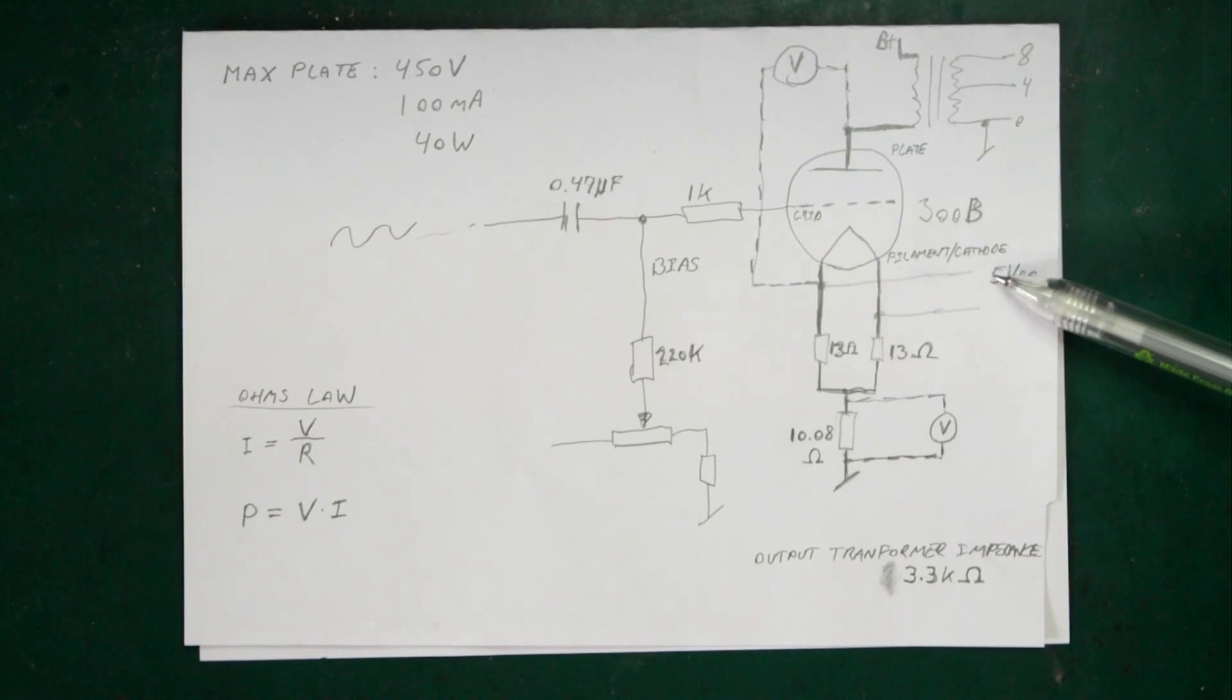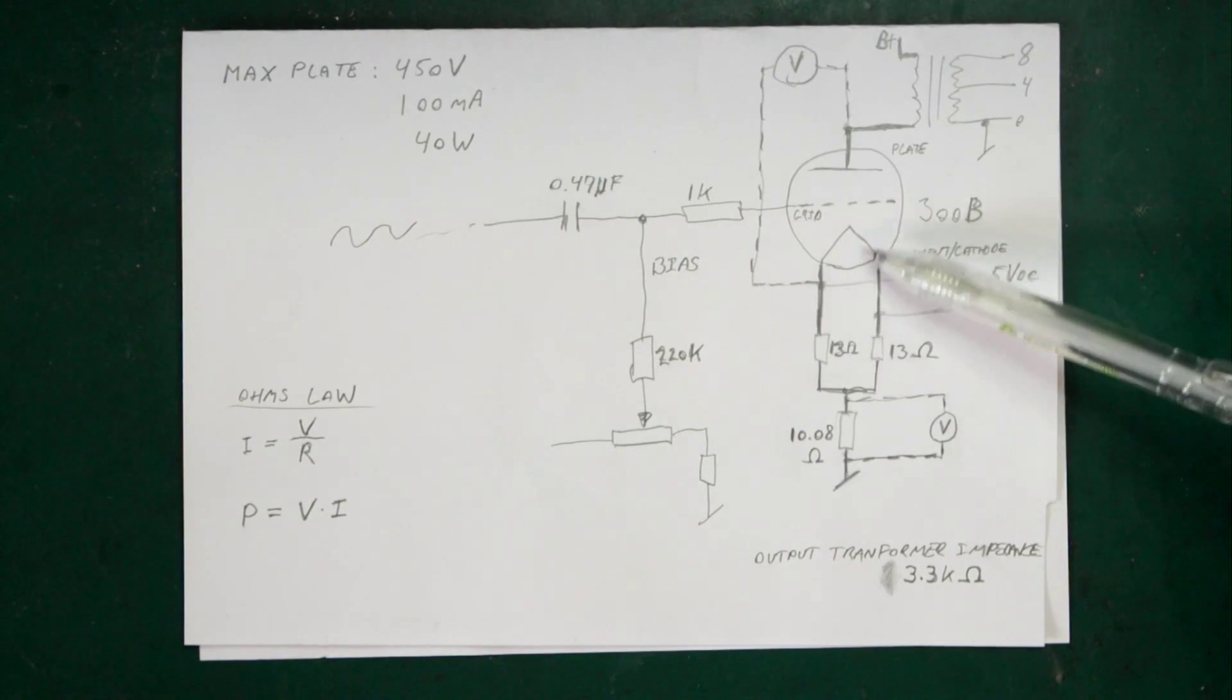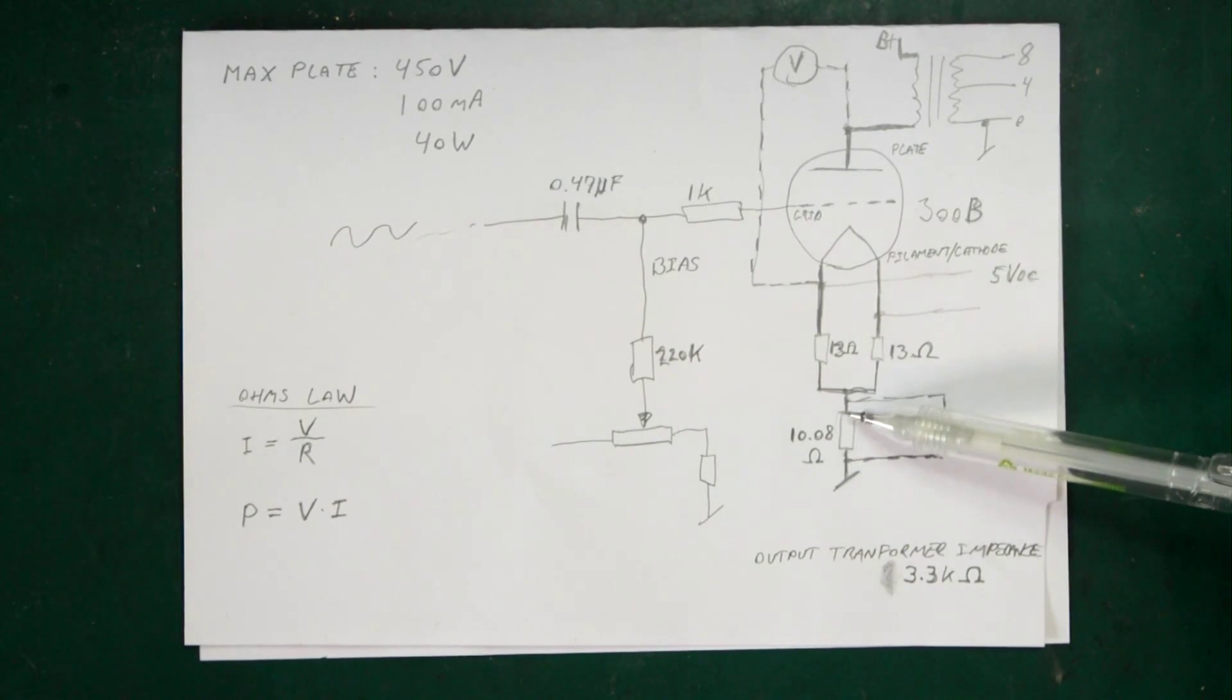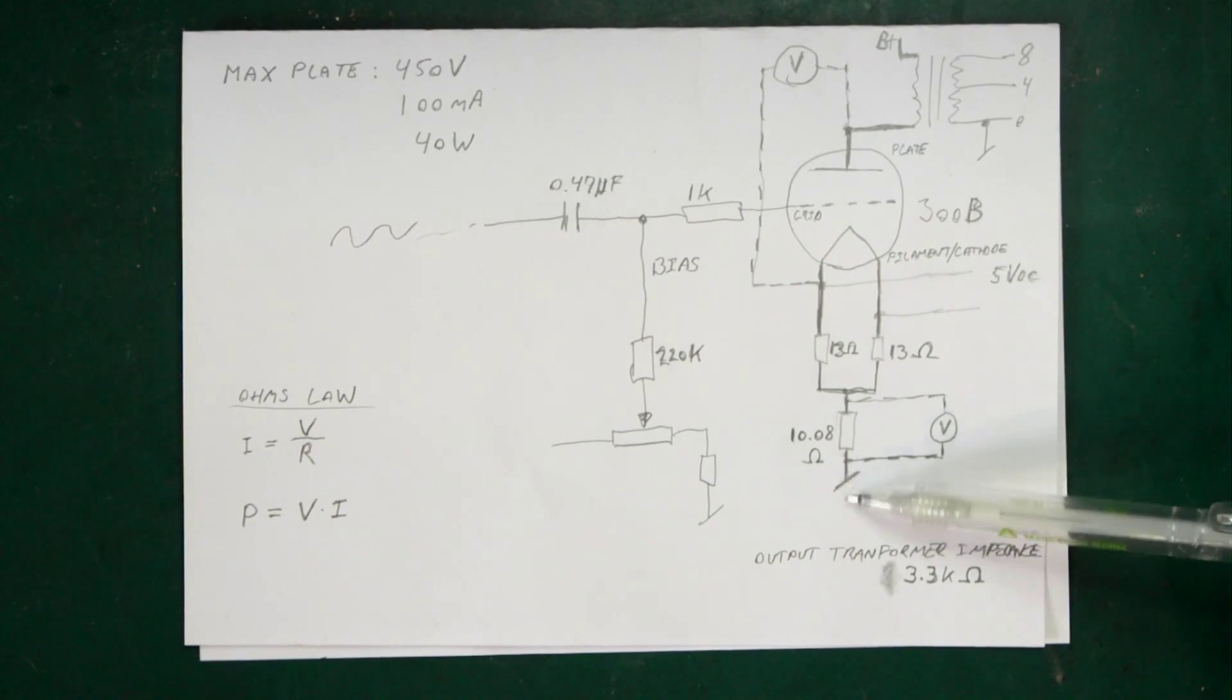So the filament is powered by a 5 volt DC here, so there's a little bit more here, a rectifier, etc. This comes from a separate winding on the transformer, so it doesn't interfere with the cathode, it will just power the filament. And then we have a couple of resistors here, so this is just so we're not shorting out the filament supply. And finally we have a resistor here, and then we go to ground.